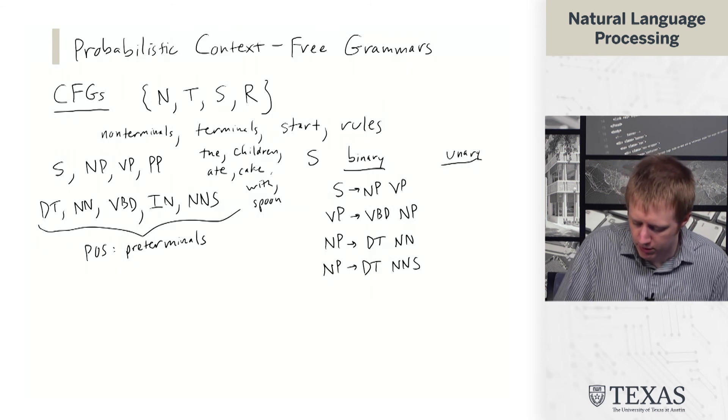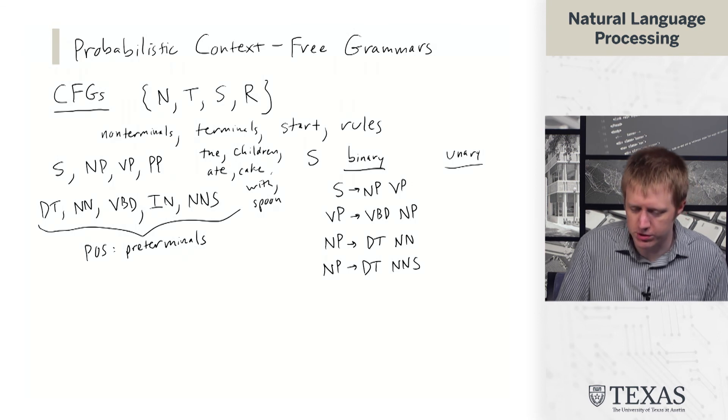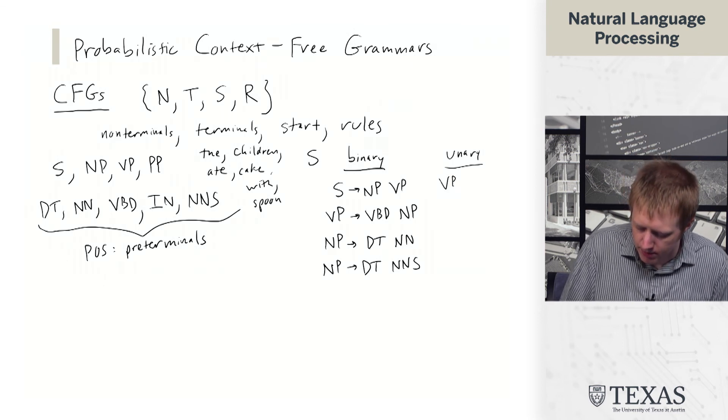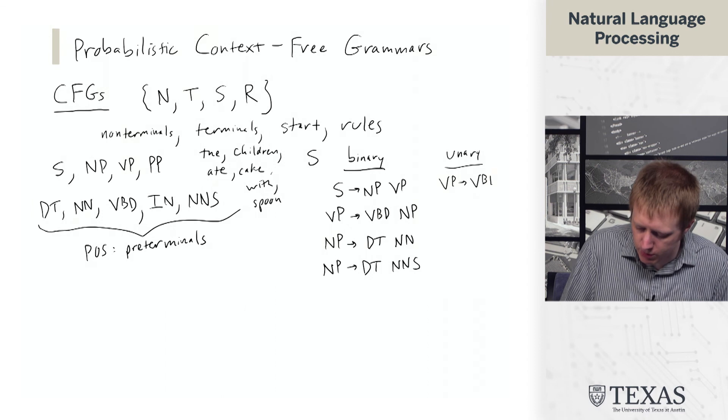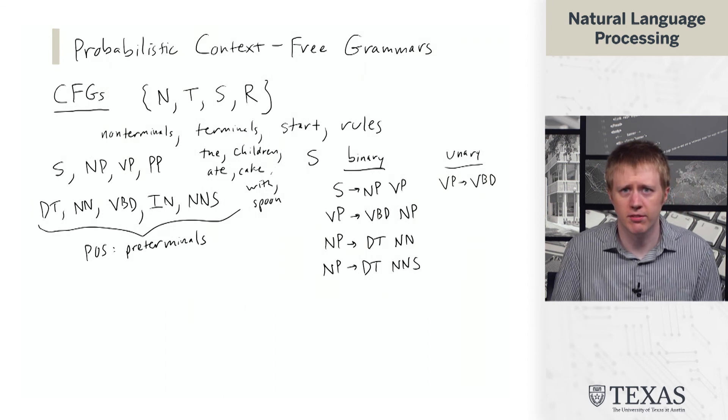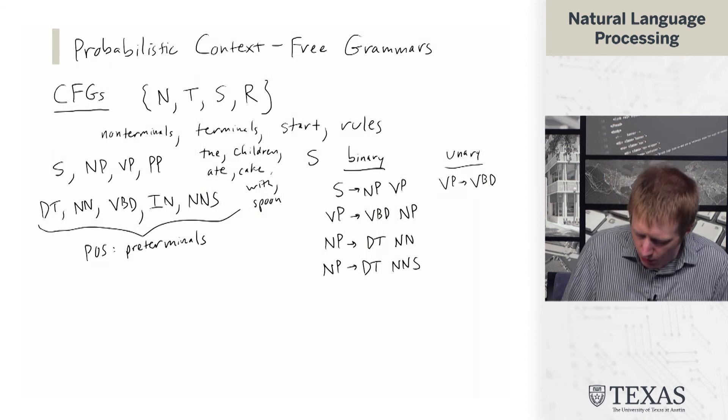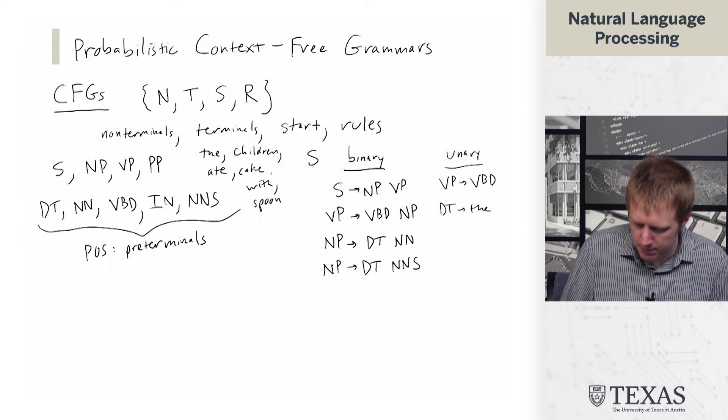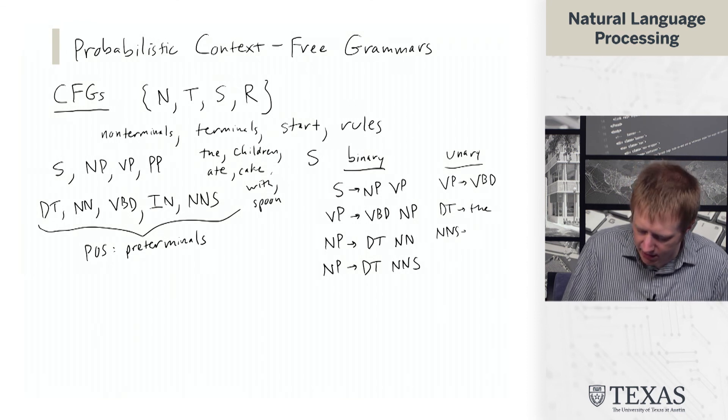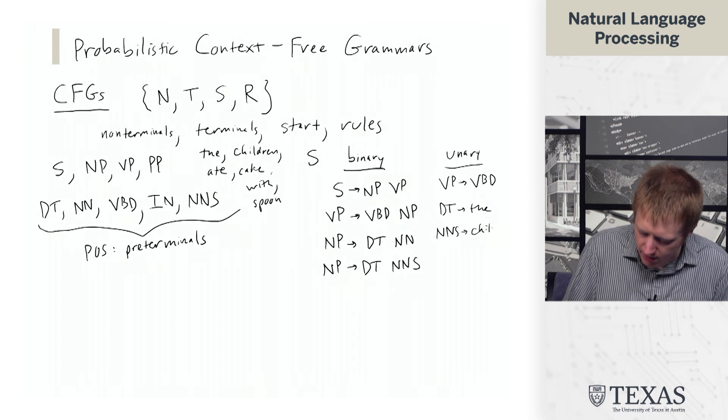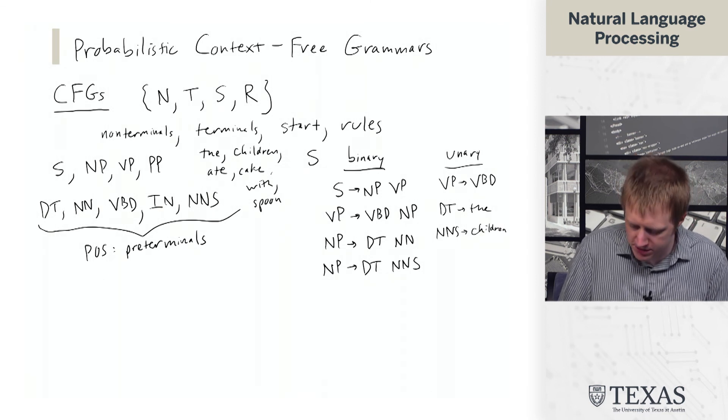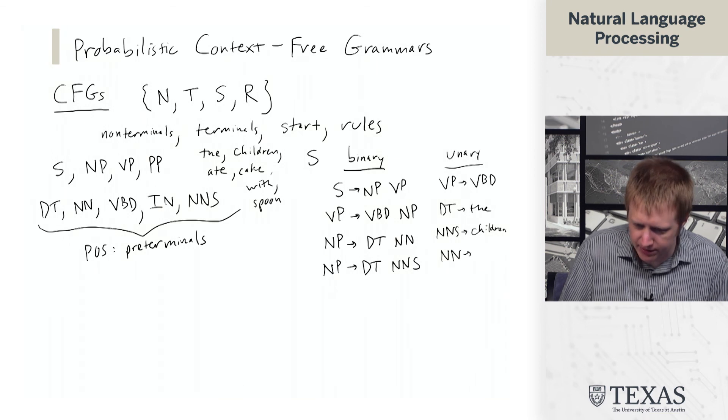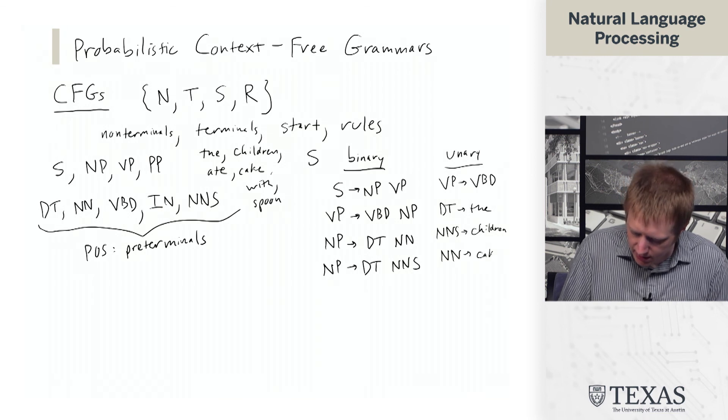We also have unary rules, which fall into two types: unary rules involving non-terminals, or what's called our lexicon, which is basically the last layer of the tree where part-of-speech tags rewrite as words.